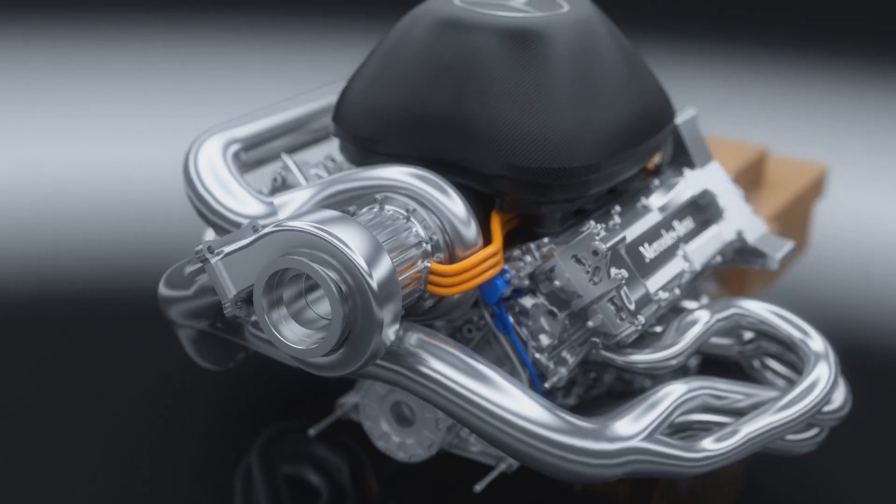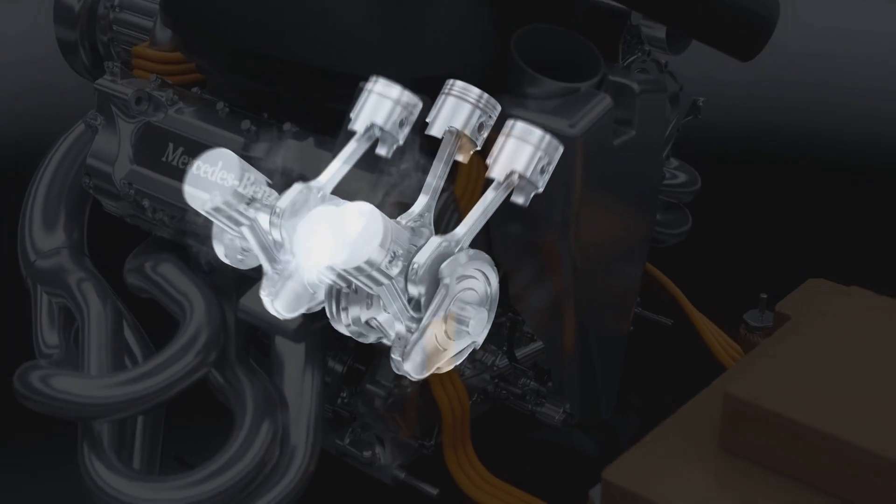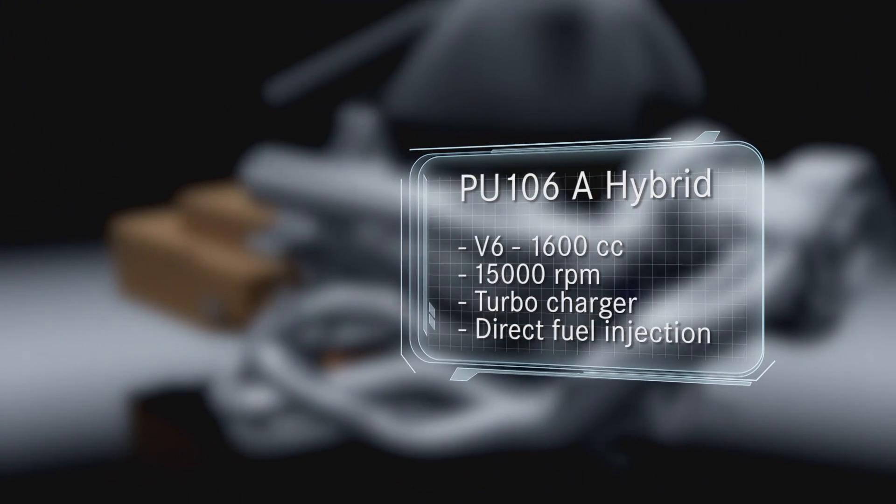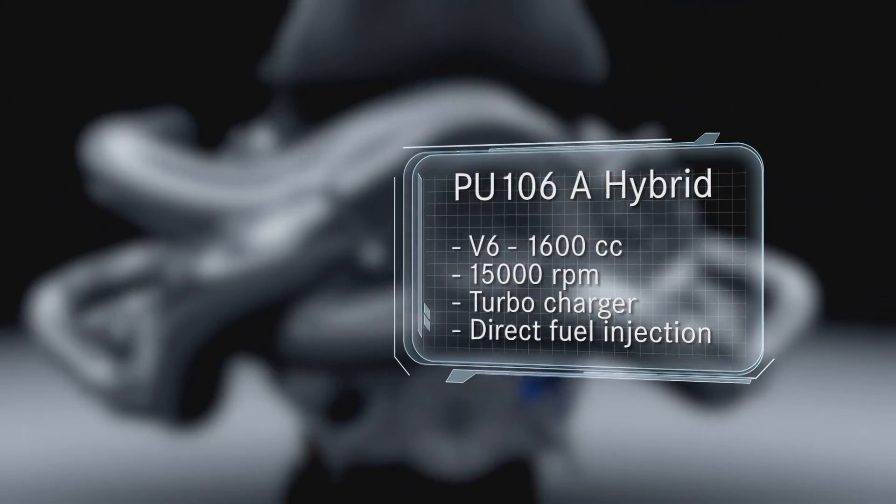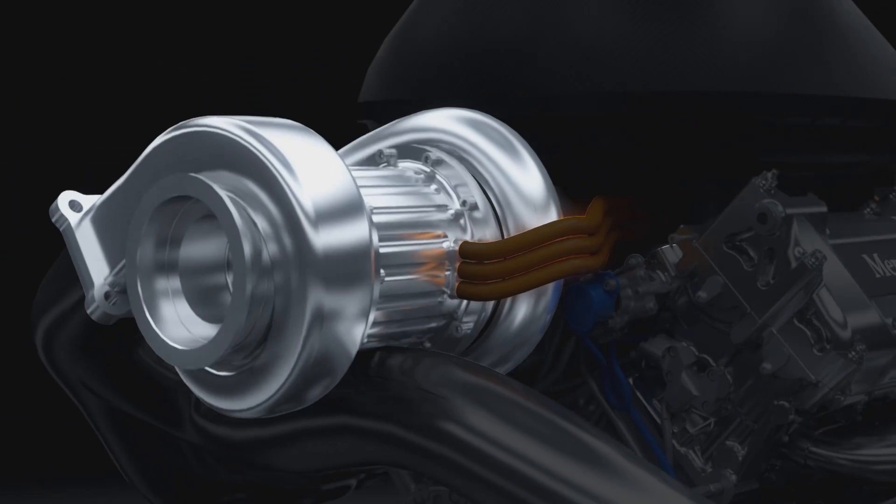The new engine regulations require downsizing from a 2.4-litre V8 to a 1.6-litre V6. Maximum revs have dropped from 18,000 rpm to 15,000. To achieve higher and more efficient power output, the new V6 is fitted with a turbocharging system and high-pressure direct fuel injection.